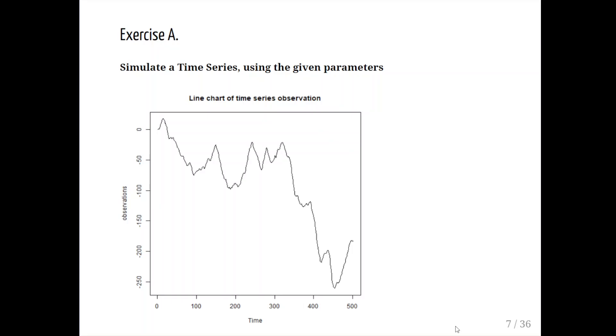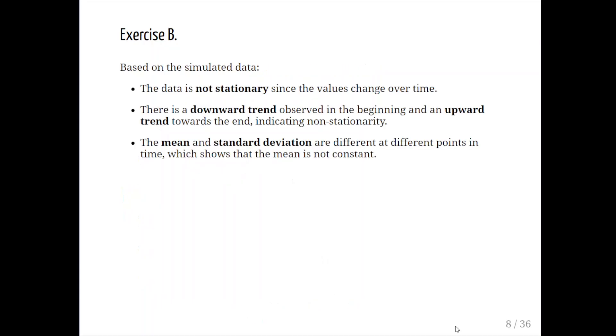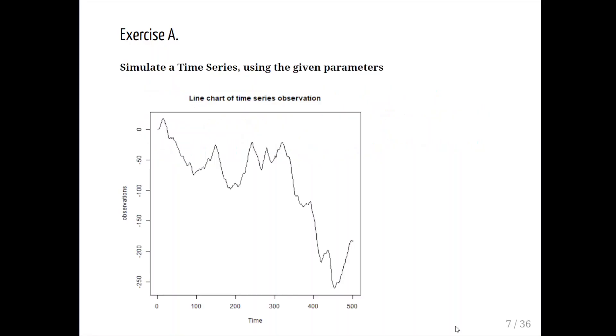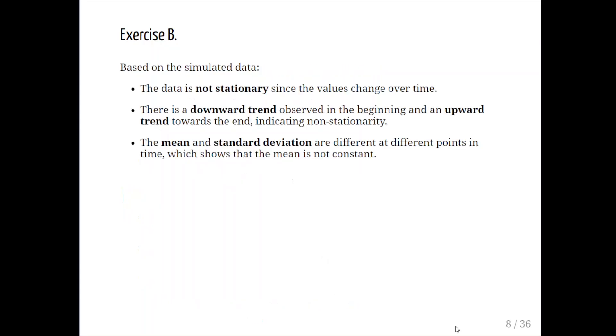This is the plot that we get. It looks reasonably uniform around the 50 mark and then just drops drastically. We're asked to make a quick judgment on it. The data is not stationary since the values change over time - it's noticeably quite jagged. There is a downward trend observed in the beginning and an upward trend towards the end, indicating non-stationarity. The mean and standard deviation are different at different points in time, which means the mean is not constant.